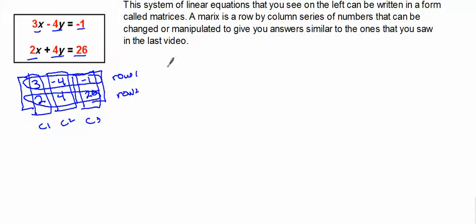So this 3, negative 4, negative 1, 2, 4, 26 is considered a 2 by 3 matrix. This means by—it's a 2 by 3 matrix.